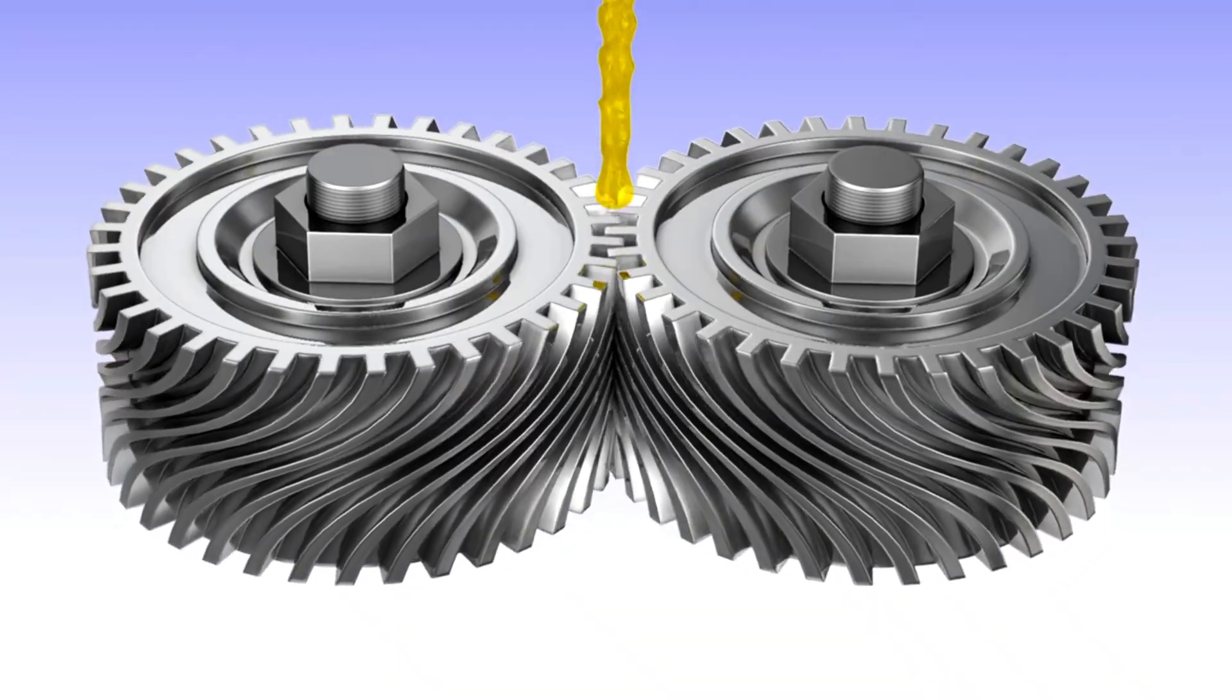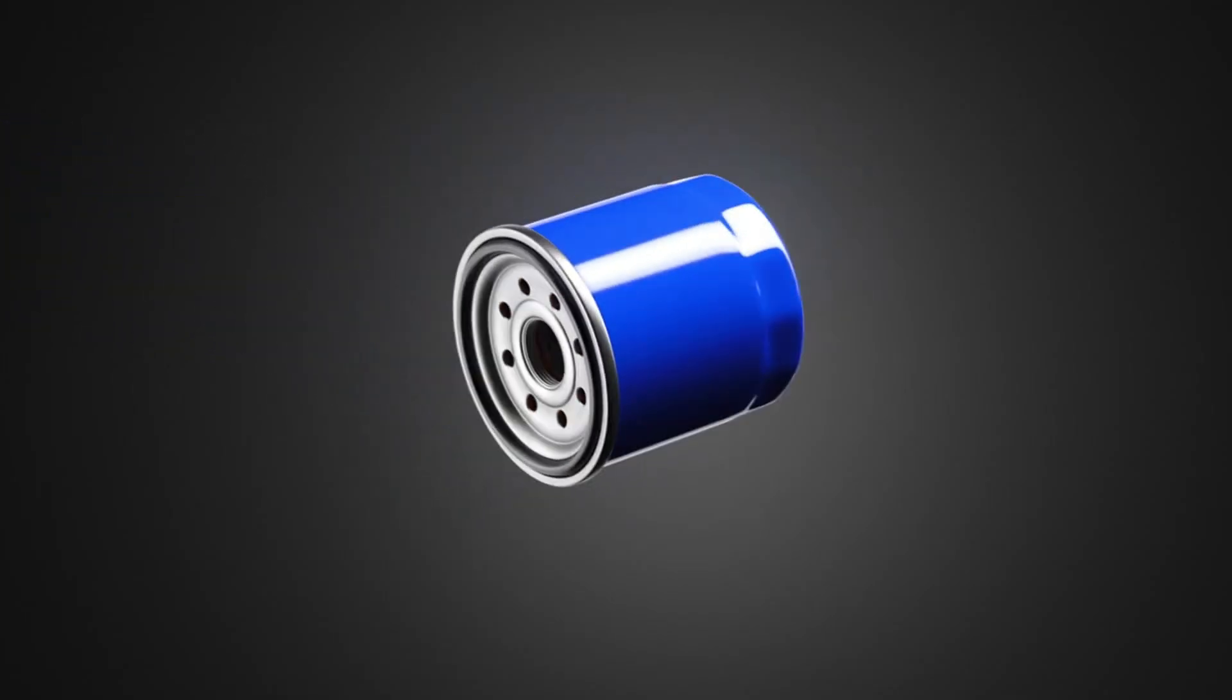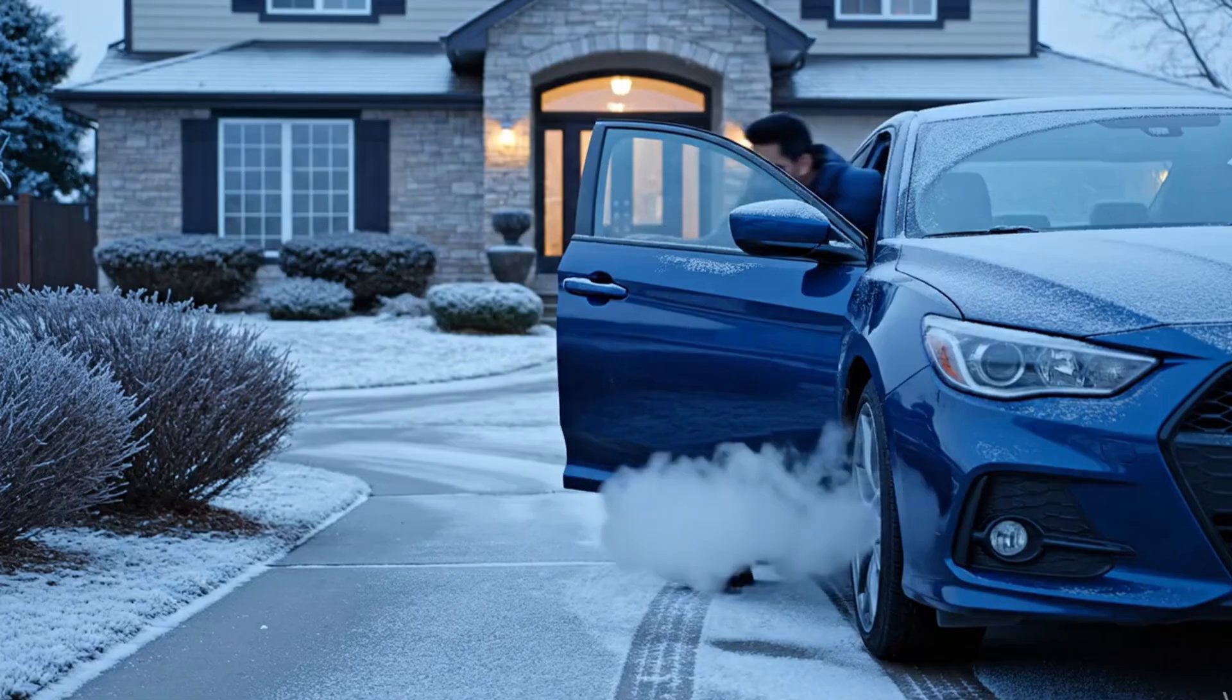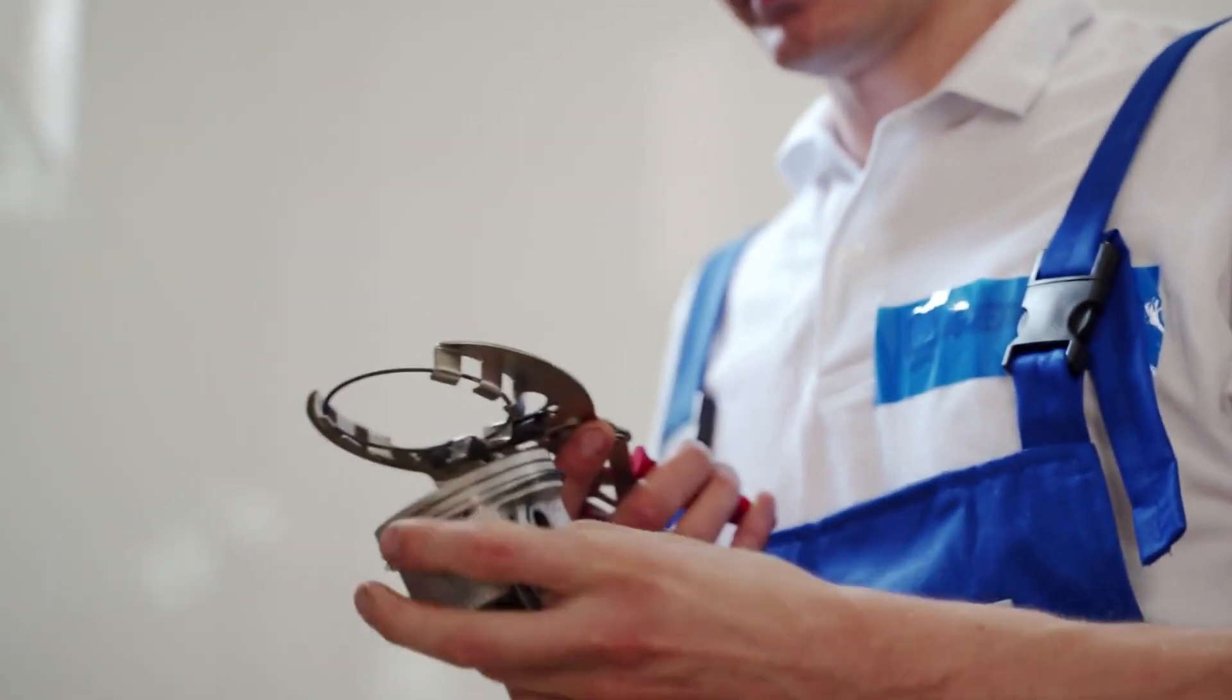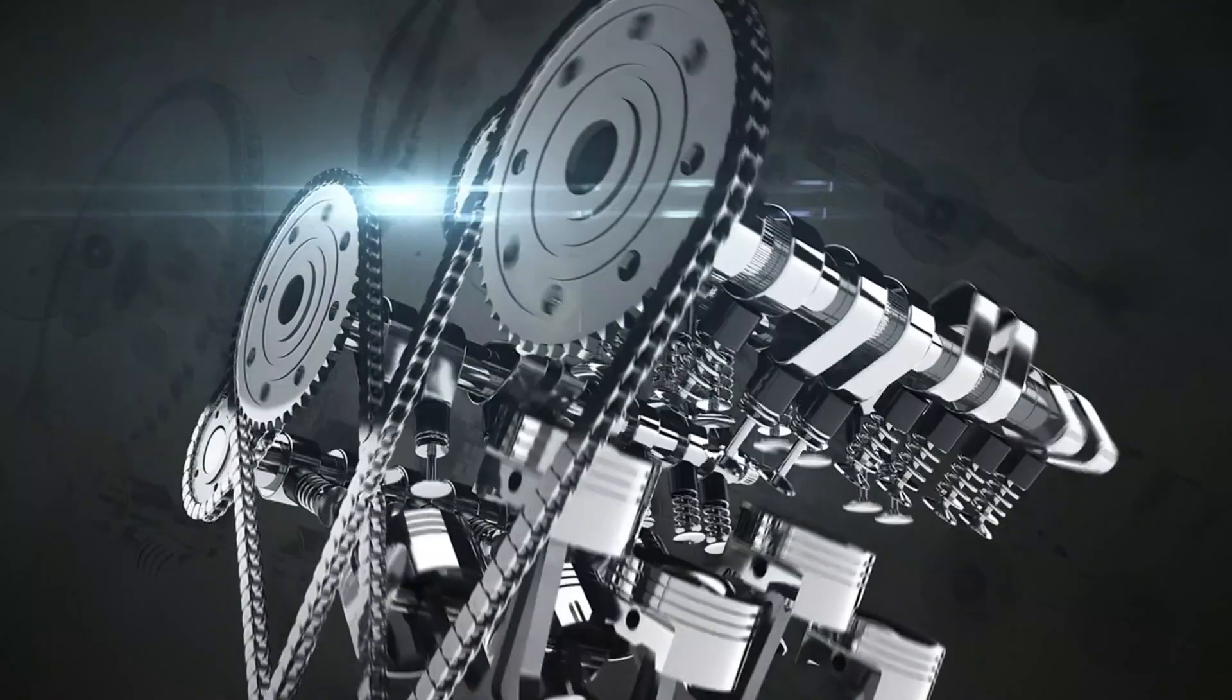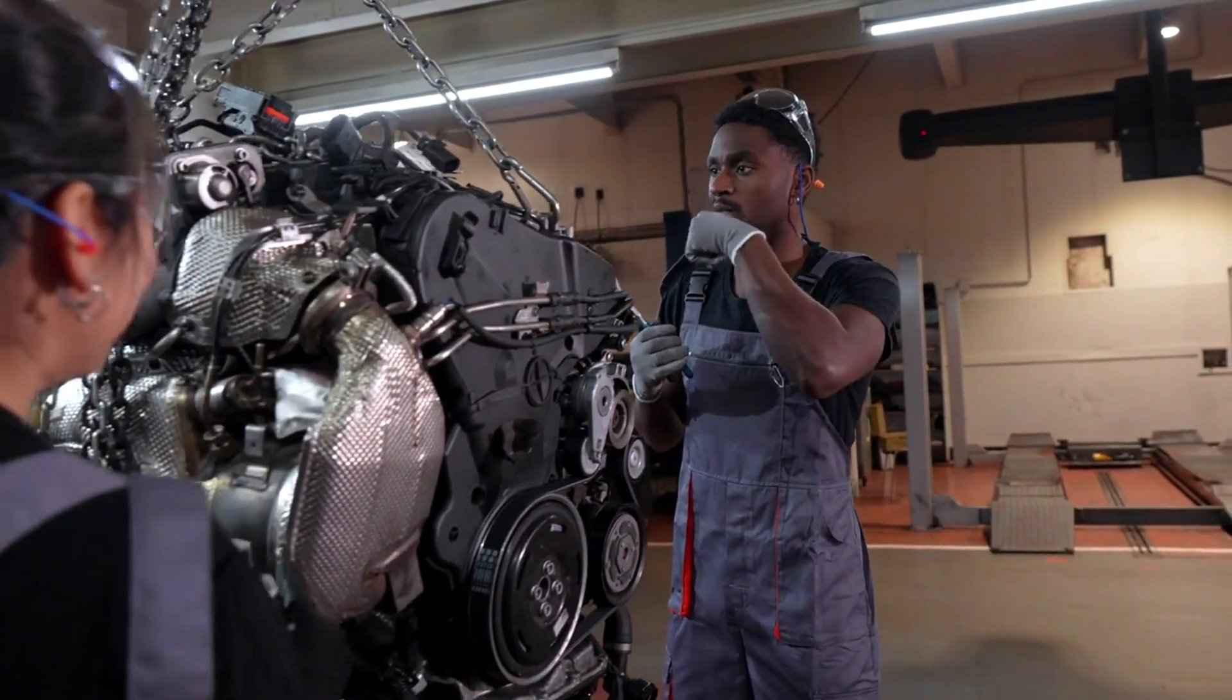Oil still lubricates moving parts, but it also removes heat from highly loaded surfaces that coolant never touches. It cleans by carrying combustion byproducts, soot, metal particles, and debris to the oil filter. It protects internal components from rust and corrosion during cold starts and short trips. And just as importantly, it helps seal clearances between moving parts. But there's one job that matters more today than ever before: modern oil acts as hydraulic fluid.